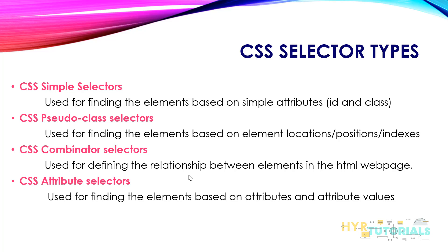A selector is a pattern we write to find an element. Simple selectors means we write the pattern using basic simple attributes like ID and class. If you write any pattern using ID and class name, we call those simple selectors. This also includes the universal selector and the element tag name selector.